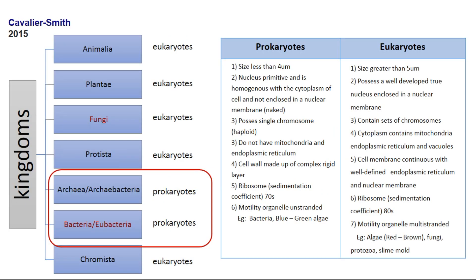Going back to the biological classification of Cavalier-Smith, we remember that he and his collaborators divided all biological organisms into seven kingdoms. Microbiology studies the single-celled organisms, called prokaryotes predominantly. Sometimes we also study the fungi, which are eukaryotes.